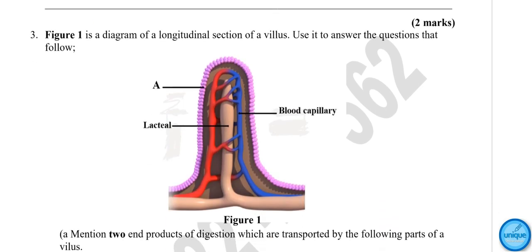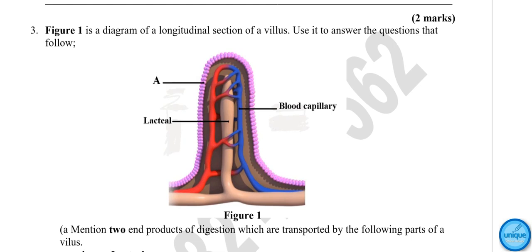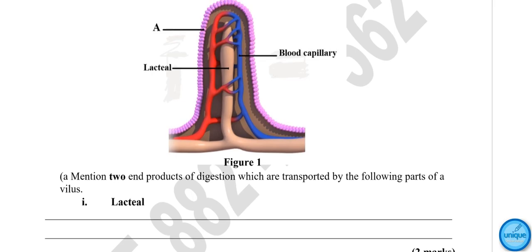Question number three: Figure 1 is a longitudinal section of a villus. Use it to answer the questions that follow. So this was the diagram. The blue thing here is a blood capillary. Mention two end products of digestion which are transported by the following parts of a villus.